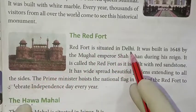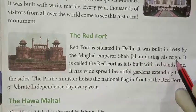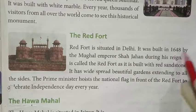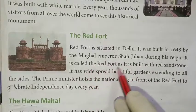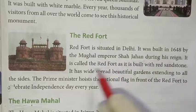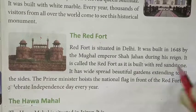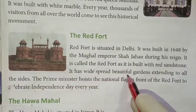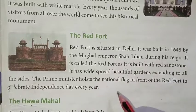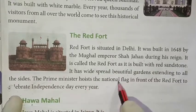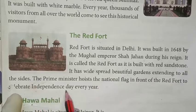It was built in 1648 by the Mughal emperor Shah Jahan during his reign. It is called the Red Fort as it is built with red sandstone. It has a wide, beautiful garden extending to all sides. The Prime Minister hoists the national flag in front of the Red Fort on Independence Day every year.